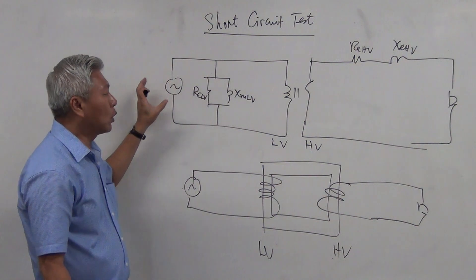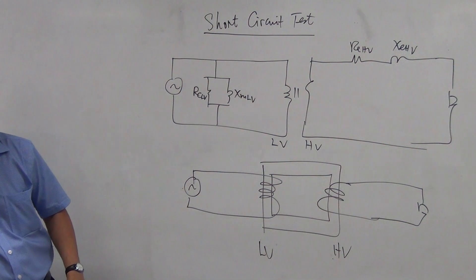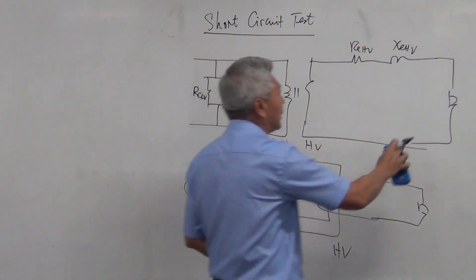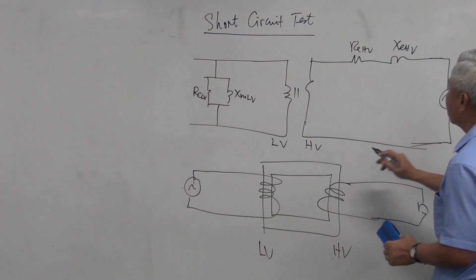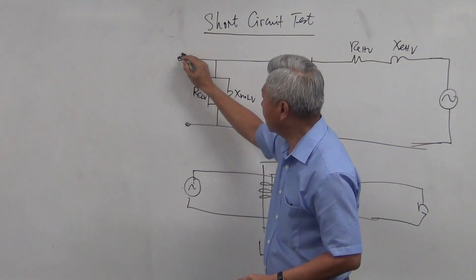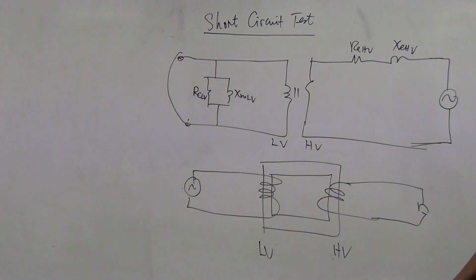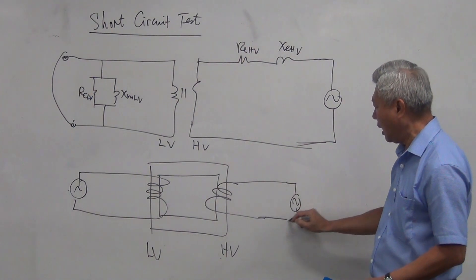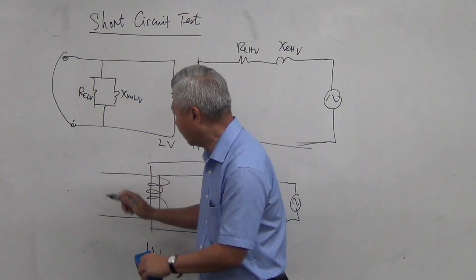The open circuit test experiment was done on the low voltage side. The short circuit test is the opposite — we do the experiment on the high voltage side. We remove the load, connect the power supply to the high voltage side, and the low voltage side is short-circuited. That's how the name comes about: short circuit test.